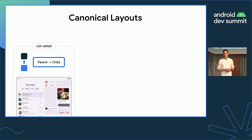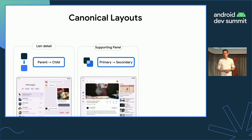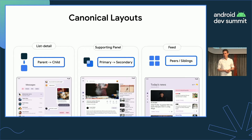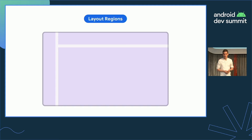First, we have the list detail, which is a parent-child relationship where you have two panes that are directly in line in the navigation hierarchy with each other. Next, we have the supporting panel where you have a primary and secondary pane that are not necessarily subsequent to each other in the navigation hierarchy, but both important and integral to one another. And finally, we have the feed layout where all of the panels are peers or siblings in the hierarchy. If you're familiar with Material Design's large screen design guidance, you'll know the idea of layout regions that supersedes all of this — containers that form a framework for thinking about how interfaces scale across different screens based on behavior, content, and function.